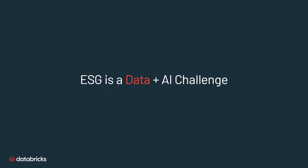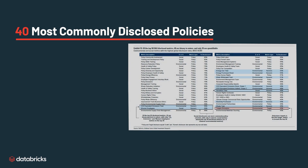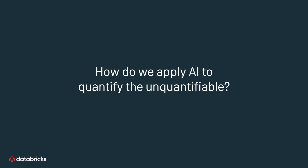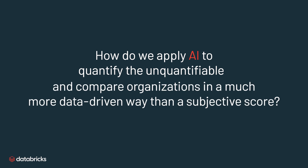ESG is a data and AI challenge. The world of ESG is highly unstructured by nature. If we look at the 40 most commonly disclosed policies, only 10 are metrics and only 10 are hard numbers. The rest are purely policies, initiatives, and mainly text coming from different systems. So how do we apply AI to quantify the unquantifiable and compare organizations in a much more data-driven way than a subjective score?